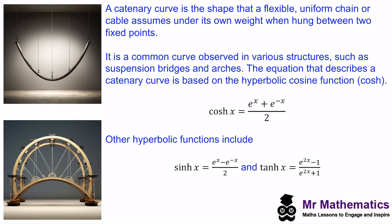In this video I want to introduce you to a new type of curve and the set of mathematical functions that describe it. A catenary curve is the shape that a flexible uniform chain or cable assumes under its own weight when hung between two fixed points. It looks a little bit like a quadratic but with a flatter bit at the bottom. This is a common curve observed in various structures such as suspension bridges and arches — here we have a suspension bridge showing the upside-down catenary curve.